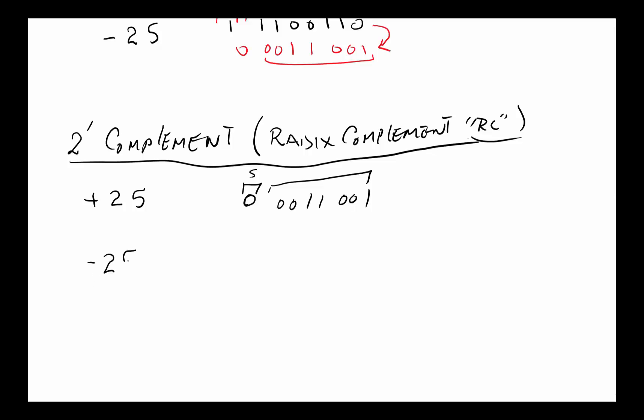The minus 25 is represented by taking the plus, complementing, and then adding 1 to it. It's a two-step process. Step 1 is doing one's complement, or complementing everything, much like we did in one's complement, so it would be 11100110.